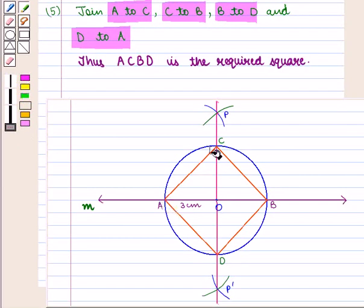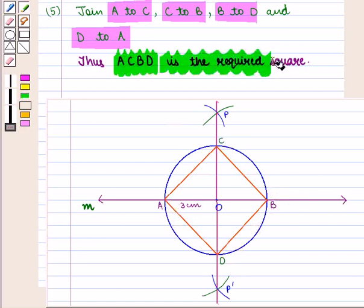Thus ACBD is the required square. This completes our session. Hope you enjoyed this session.